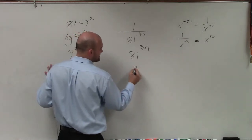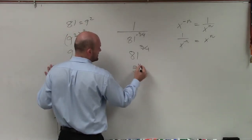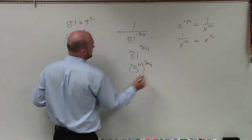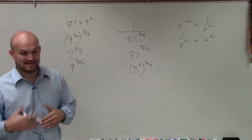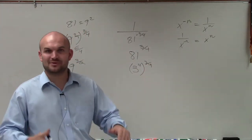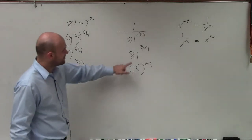And that actually is the case. I can rewrite 81 as 3 to the fourth power. Because 3 times 3 is 9, times 3 is 27, times 3 is 81. So 3 to the fourth power is 81.